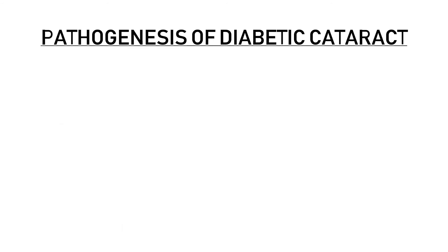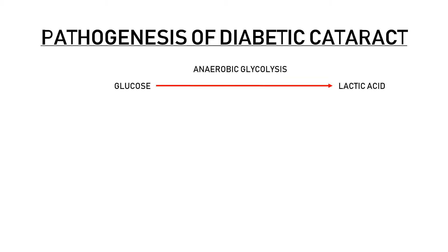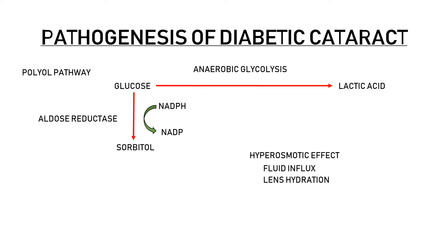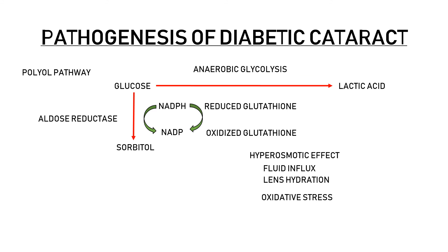Regarding the pathogenesis of diabetic cataract: the lens utilizes glucose for energy, primarily metabolized by anaerobic glycolysis. However, in conditions of glucose overload like diabetes mellitus, glucose is directed towards the polyol pathway. In this pathway, the enzyme aldose reductase catalyzes the conversion of glucose to sorbitol. Sorbitol collects within the lens and cannot diffuse out due to its polar character, creating a hyperosmotic effect that results in fluid influx and lens hydration. This conversion also causes depletion of cofactor NADPH, which is required for the regeneration of reduced glutathione — a major antioxidant — contributing to increased oxidative stress and lens opacification.